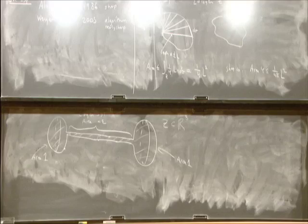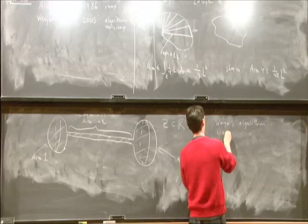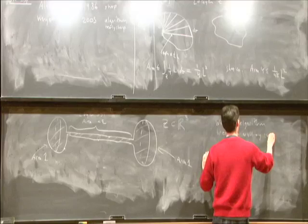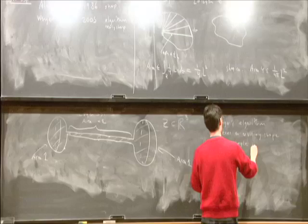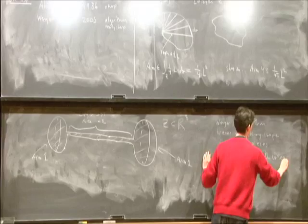So Wenger's algorithm breaks an arbitrary shape into simpler shapes, simple pieces, and fills them in with cones. So that hopefully gives some flavor of how the subject works, how the inequalities work.